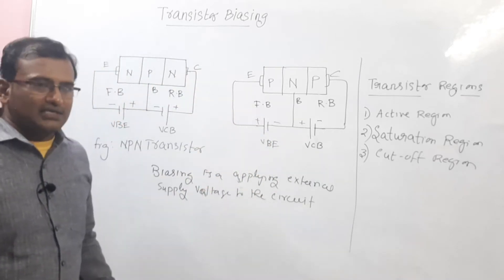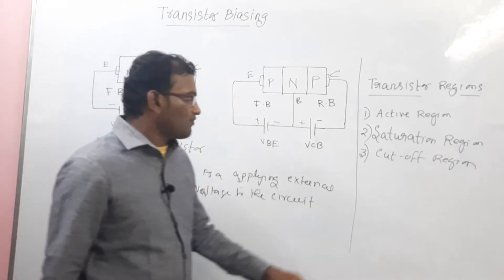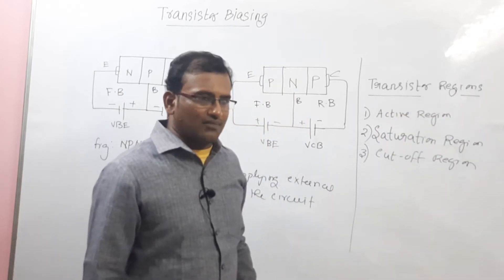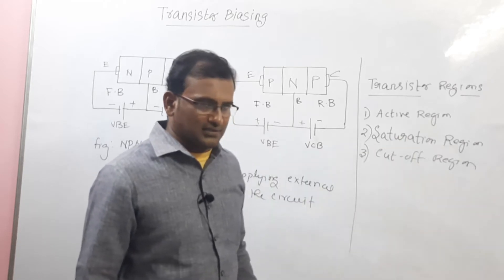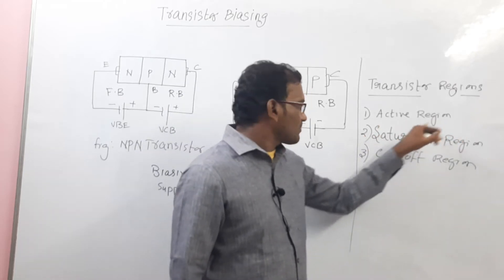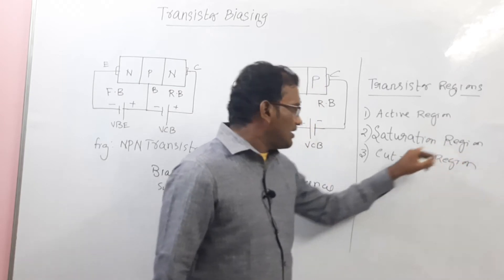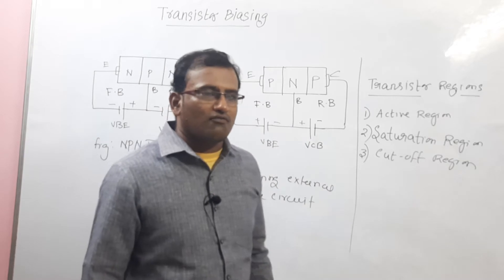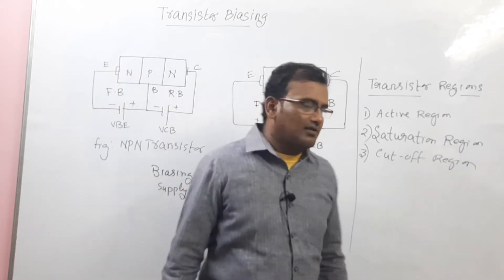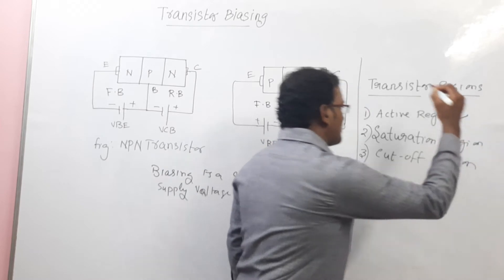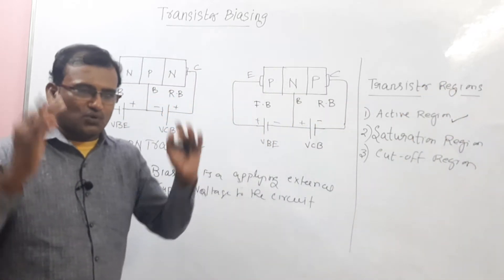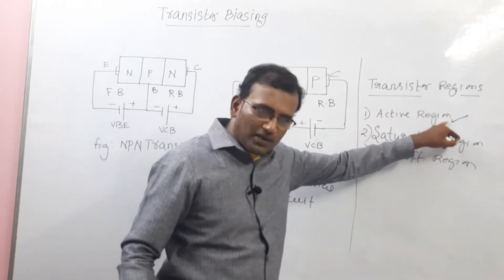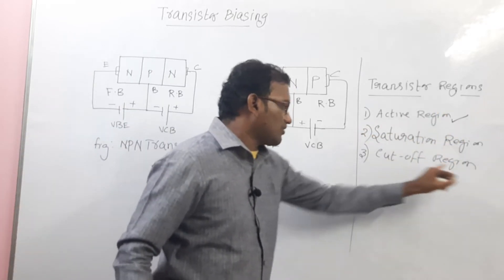In this biasing, there are three regions. First one is active region, saturation region, and cutoff region. Among these three regions, which one is suitable for transistor biasing? The first one — active region. In active region only, any electronic circuit which is suitable operates, not in saturation or cutoff region.